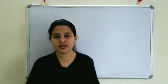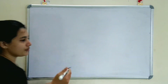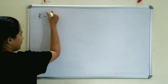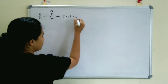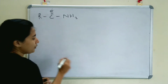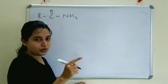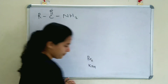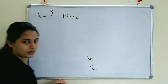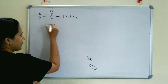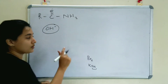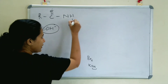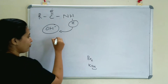Now let's discuss the mechanism behind Hoffman Rearrangement. We start with the primary amide (R-CO-NH2). The reagents are Br2 and KOH or NaOH. The OH⁻ will attract one of the hydrogens of NH2, which is eliminated as H⁺ and combines with OH⁻ to form water.